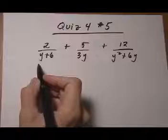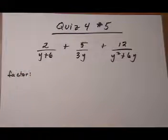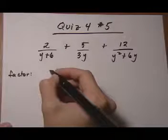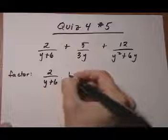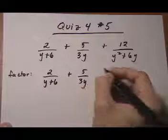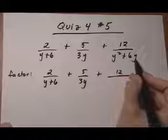So the first step we want to do is factor the denominators, because once we factor the denominators, we're going to be able to see what the least common denominator is much easier. The first fraction cannot be factored. The second one, no factoring needed. The third one, we can pull out the greatest common factor of y.